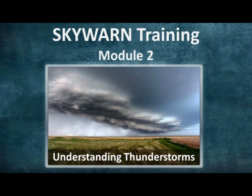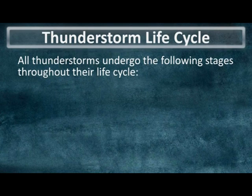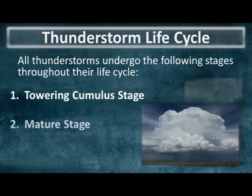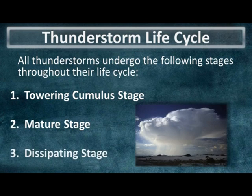The thunderstorm life cycle consists of three stages. The first is the towering cumulus stage, followed by the mature stage, and then the dissipating stage.